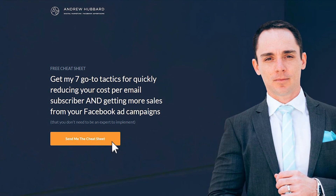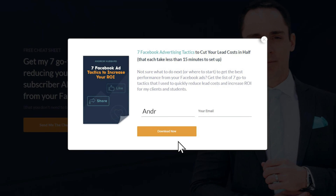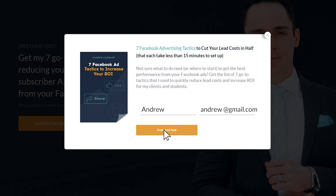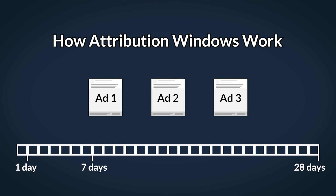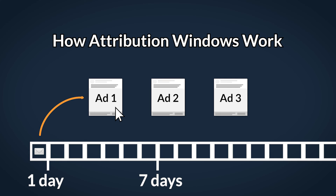Let's look at some examples. Let's say somebody sees one of your ads in the newsfeed, they click it, they go to a landing page where they enter their name and email address, opt into your email list, and become a lead. In that case, that lead conversion event is going to be attributed to the ad that they clicked on, and it's going to fall under a one day click attribution window because they converted — meaning they became a lead — within one day of clicking on that particular ad.